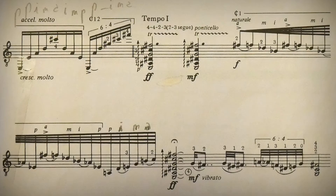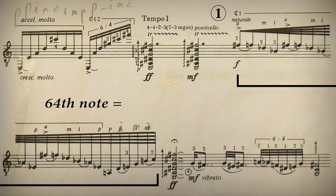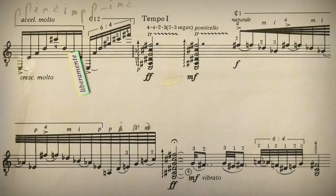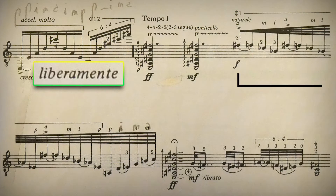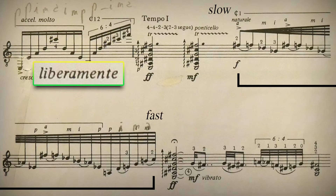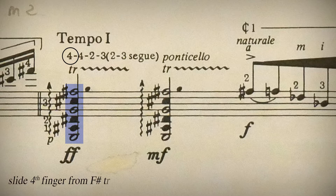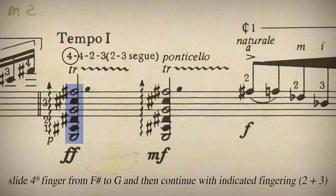On the last page, two things are worth mentioning. First, an accelerating motif that goes all the way up to a 64th note — or hemi-demi-semi-quaver. As this piece flows quite freely, the performer shouldn't worry about the precise duration, but rather focus on starting slow and finishing very very fast. The trill is executed by rolling the chord using the fourth finger as the link, then sliding the pinky up from F sharp to G, and continuing with the indicated fingering of two and three.